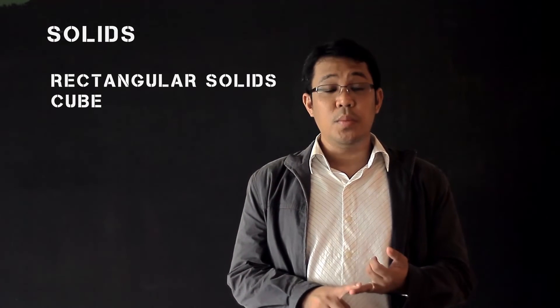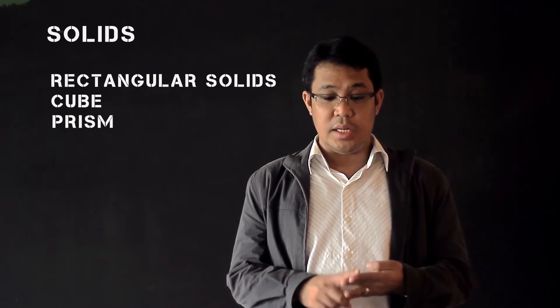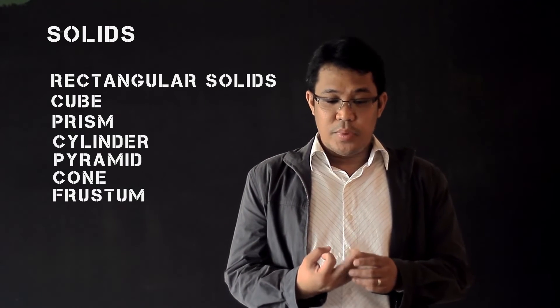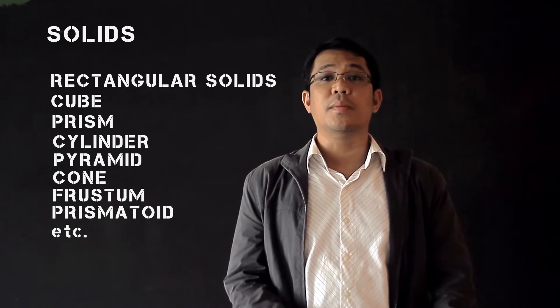Now under the second part, under solids, we will discuss again different types of solids. That will include rectangular solid, cube, prism, cylinder, pyramid, cone, frustum, prismatoid, and other types of solids.